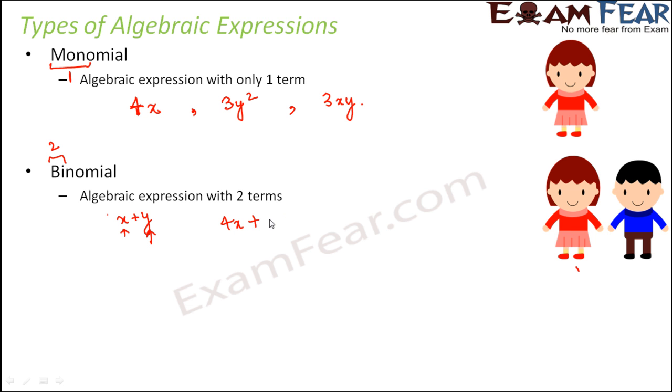So let's look at more examples, 4x plus 2. So here also you have two terms. 3y squared plus 3xy. So how many terms do you have here? 3y squared is one term and 3xy is another term. So here also you have two terms. So this is an example of binomial.